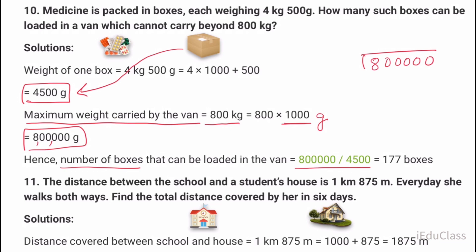Number of boxes: 800,000 divided by 4500 equals 177 boxes. Total 177 boxes can be loaded in the van.